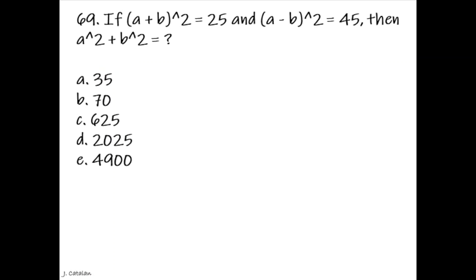Question: If (a + b)² = 25 and (a - b)² = 45, then a² + b² equals? Answer: 35.